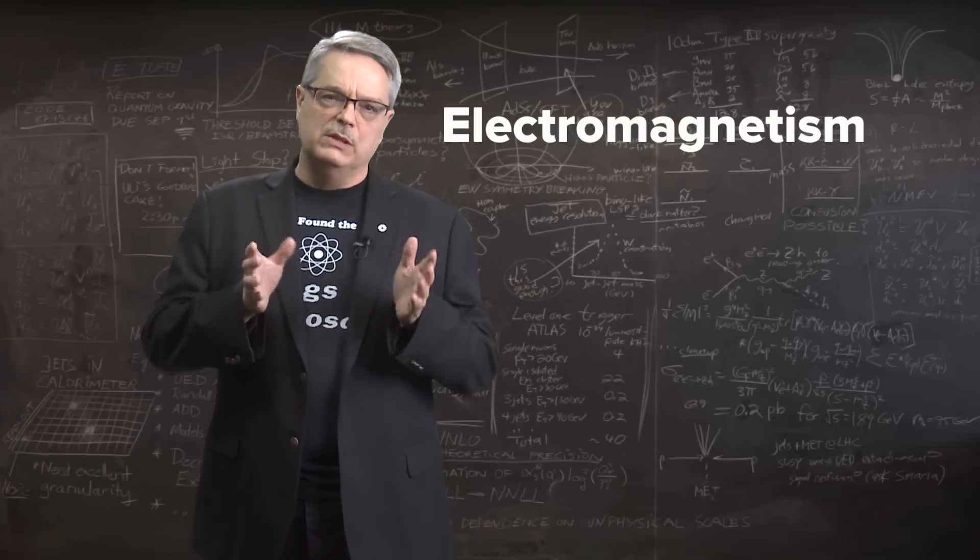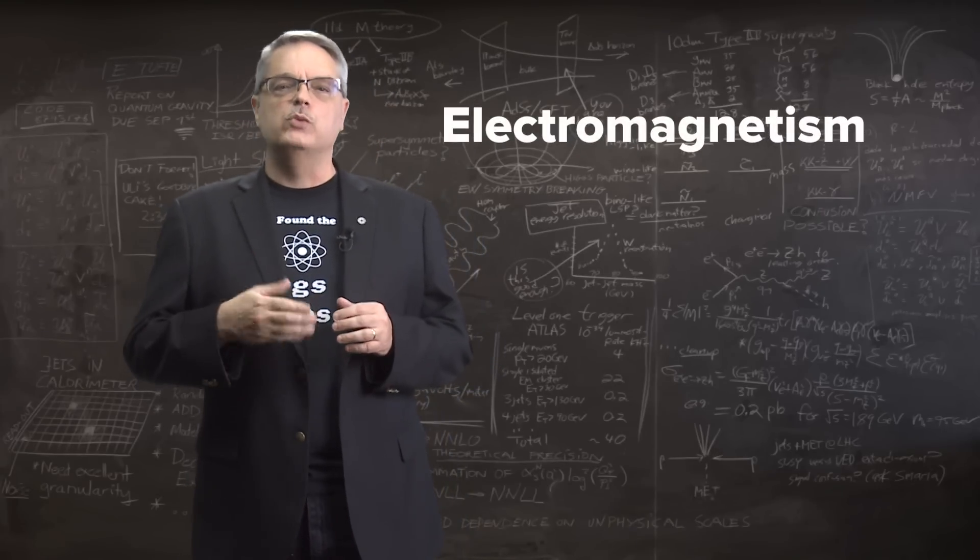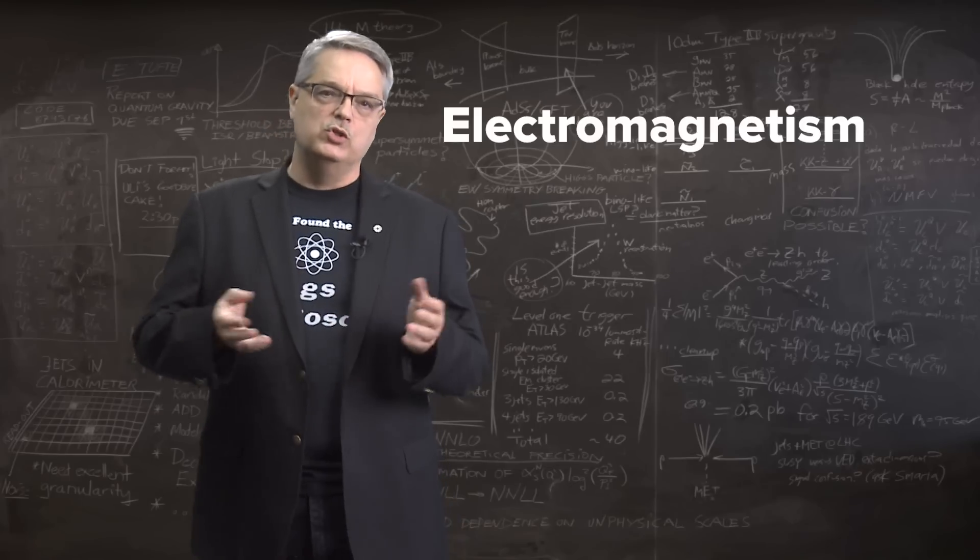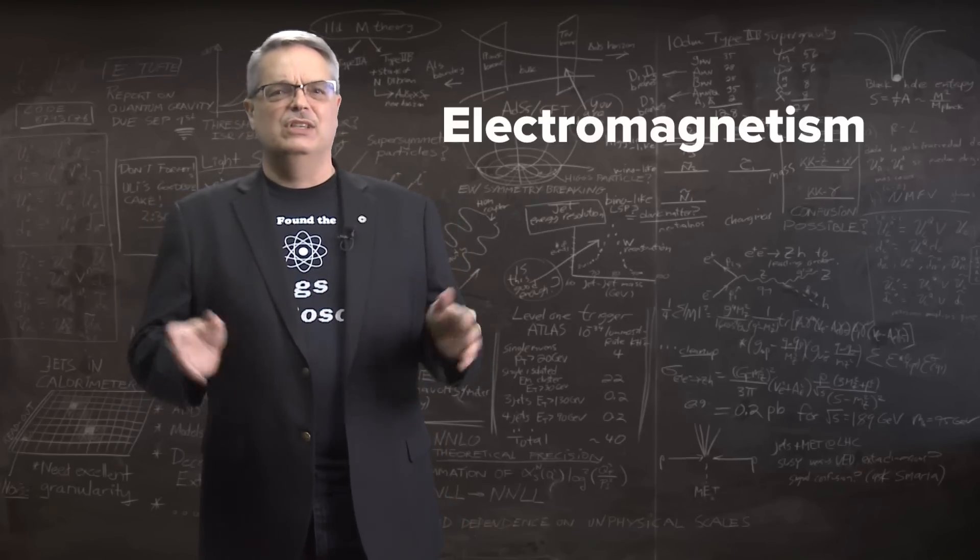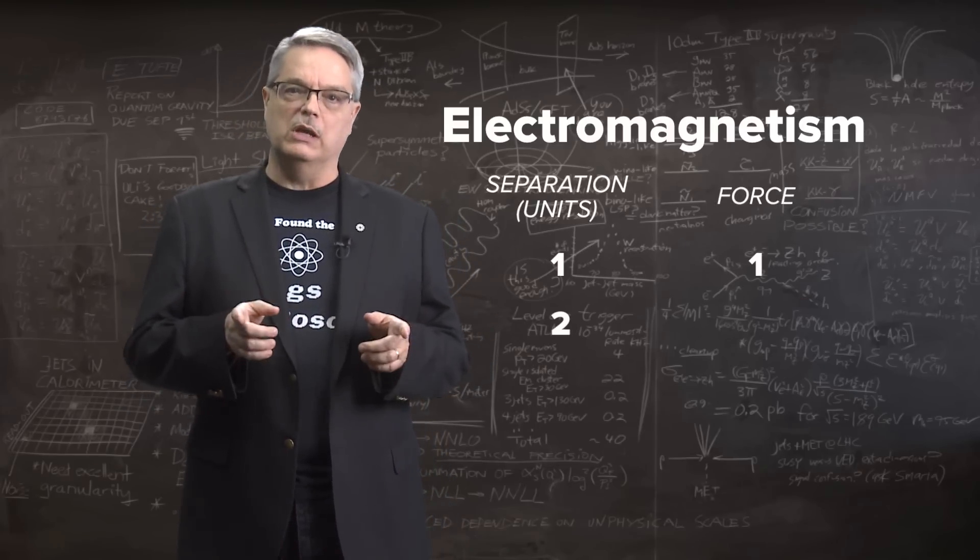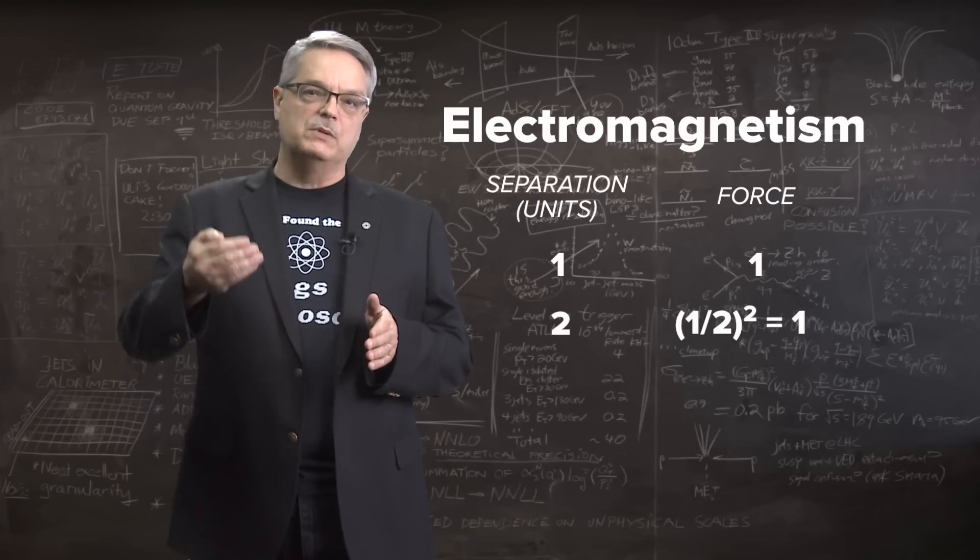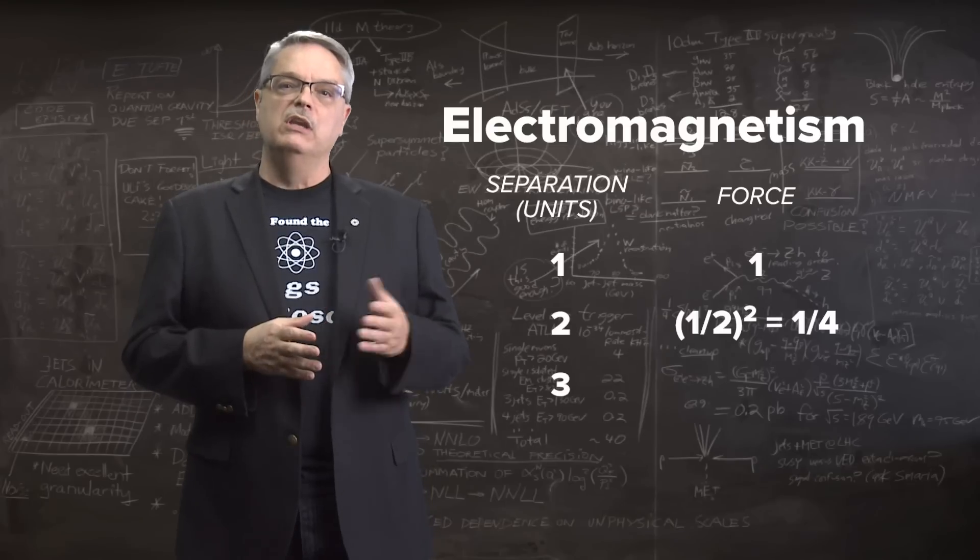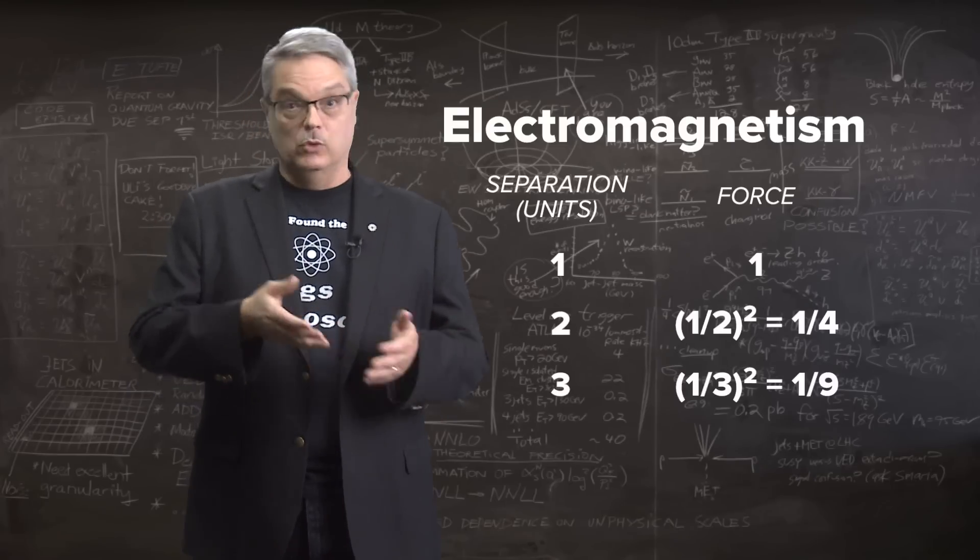The electromagnetic force behaves similar to gravity. It's a force with an infinite range, which weakens as the square of the distance between two charged objects. That's just mathematical fancy talk for saying that if you double the distance between two objects, the force between them drops by two squared, or four. If you triple the distance between them, the force drops as three squared, or nine.